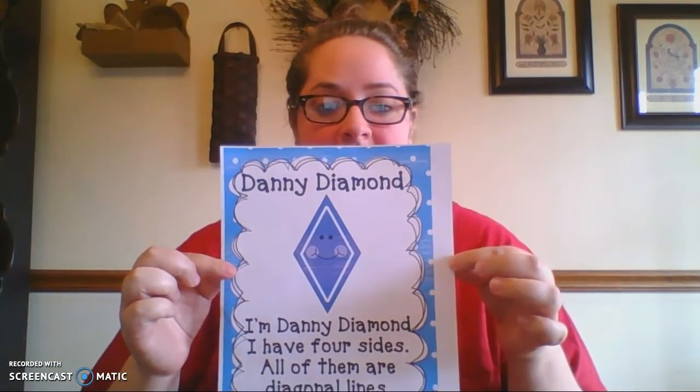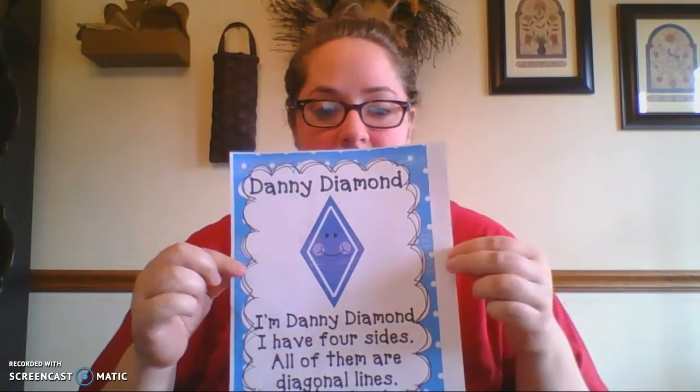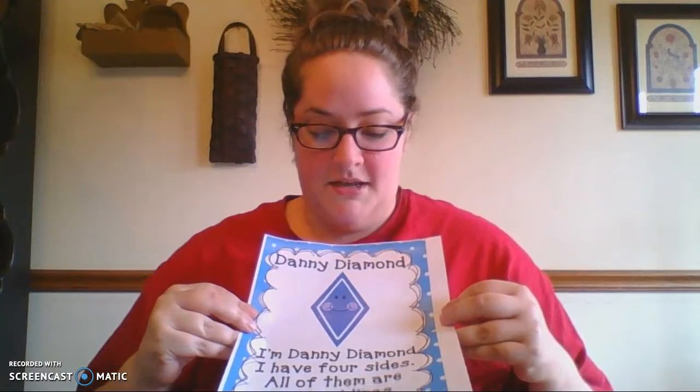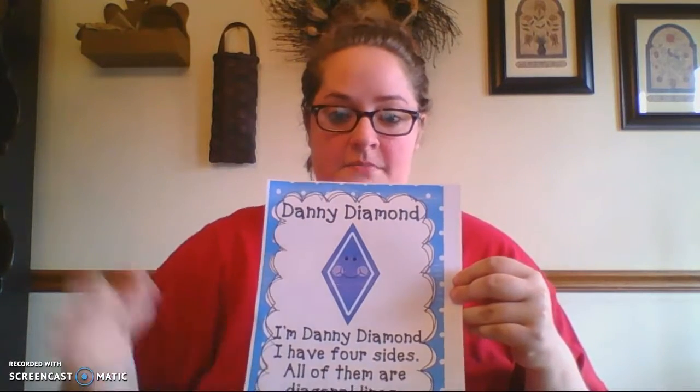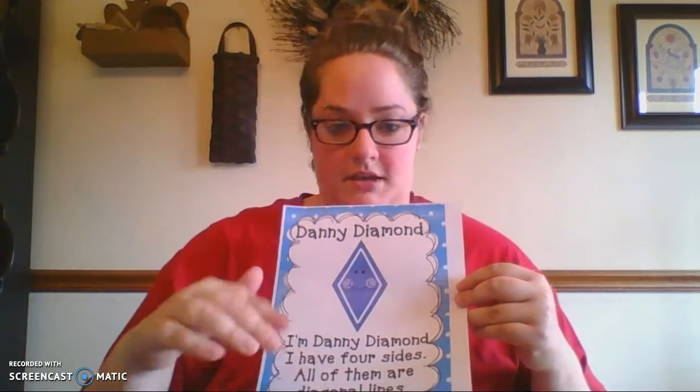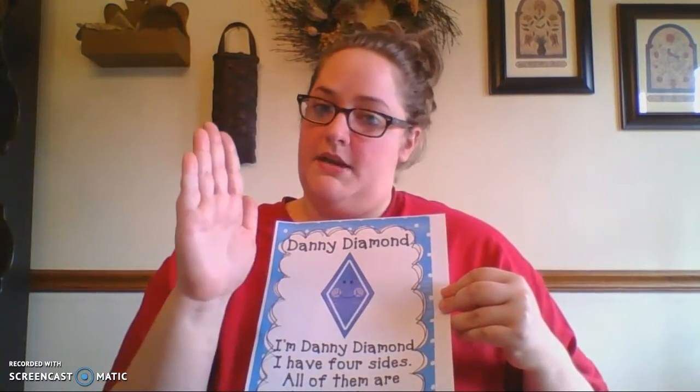Danny Diamond. I'm Danny Diamond. I have four sides. All of them are diagonal lines. See these lines? They slant. They're diagonal. They're not straight up and down.